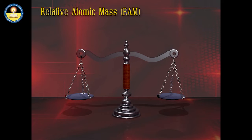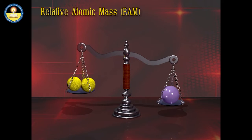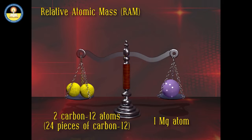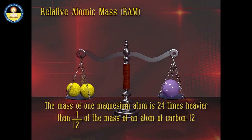Let us next find out the Relative Atomic Mass of a Magnesium atom. We place a magnesium atom on one pan and balance it with two carbon-12 atoms. We find that the Relative Atomic Mass of a magnesium atom is 24. This means that the mass of one magnesium atom is 24 times heavier than 1/12 of the mass of an atom of carbon-12.